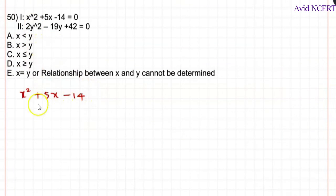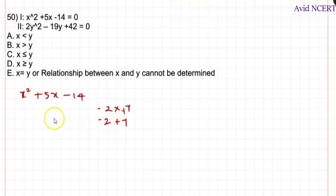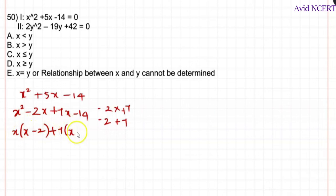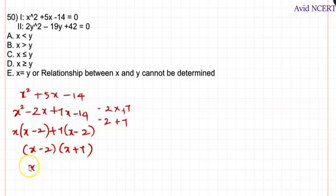Now for the 50th problem: x² + 5x − 14 = 0. Here, 2 × 7 = 14 and −2 + 7 = +5. Substituting: x² − 2x + 7x − 14, which gives x(x − 2) + 7(x − 2). Taking (x − 2) as common: (x − 2)(x + 7), so x = +2 and x = −7.